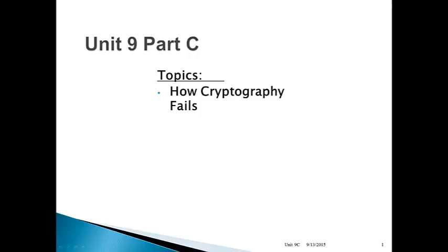Welcome to Unit 9, Part C. Our topic is how cryptography fails. We've learned a bit in the previous units about how cryptography works, what sort of cryptographic algorithms and protocols are out there, what it's capable of. Now we also have to learn about how you can do cryptography badly and fail miserably at it as well.